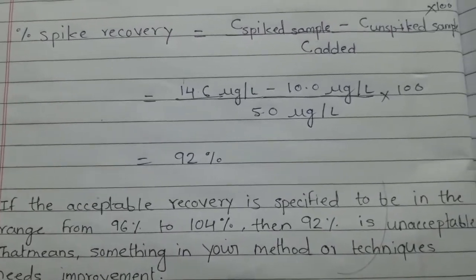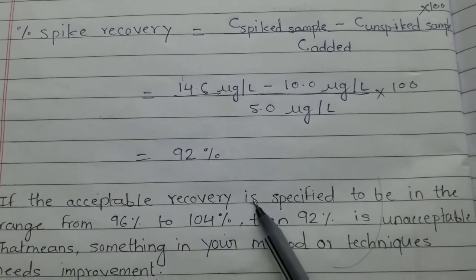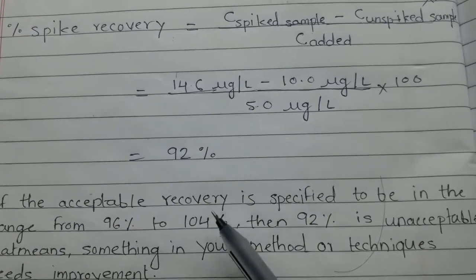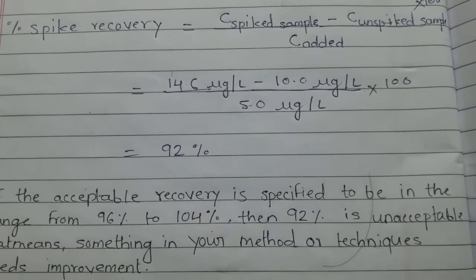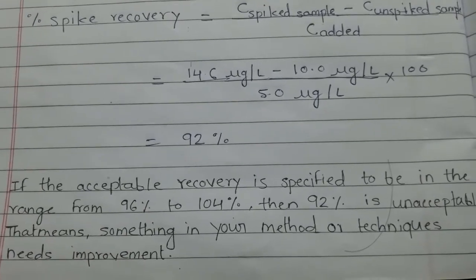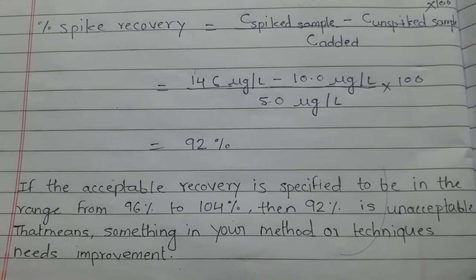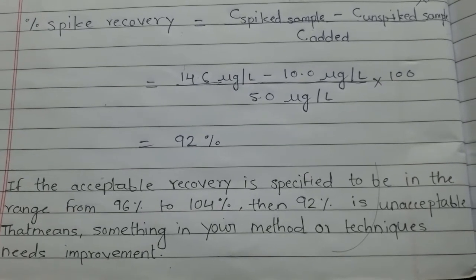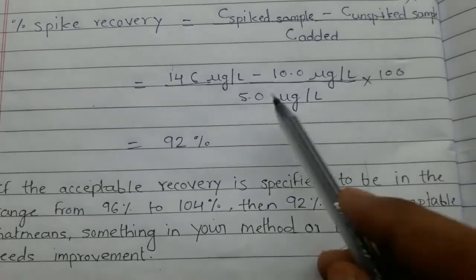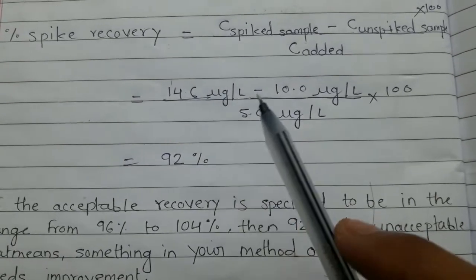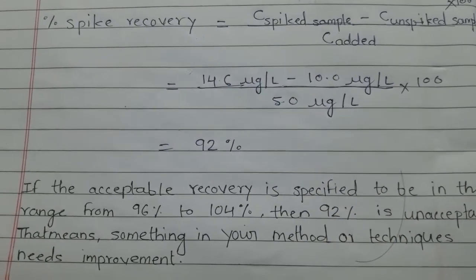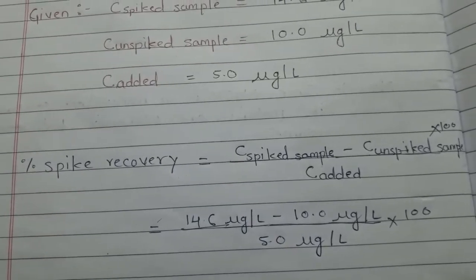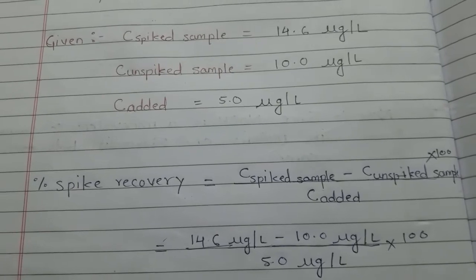Note: if the acceptable recovery is specified to be in the range of 96 to 104 percent, then 92 percent is unacceptable. If we decide our acceptable values to be between 96 to 104 percent, then in this case 92 percent would be unacceptable. I hope you have found this video useful and have understood the concept of percent spike recovery.